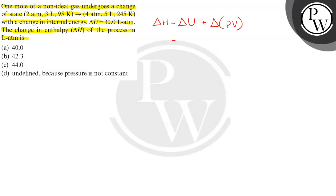And this is equal to ΔU plus Δ(PV), nothing but P₂V₂ minus P₁V₁.